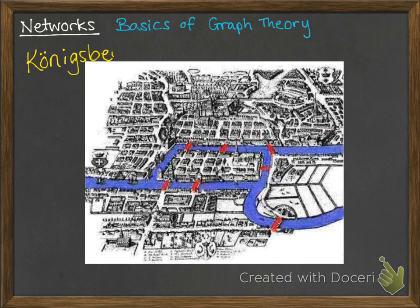It's usually something that's designed around a map. The first beginnings of graph theory as a branch of mathematics started in a place called Königsberg in 1736. There was a setup in the city where they had four pieces of land that were joined by seven bridges.